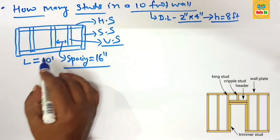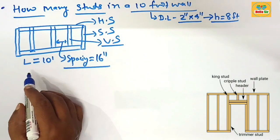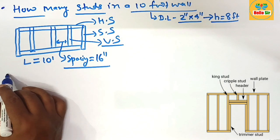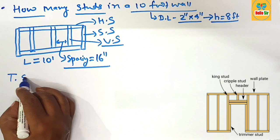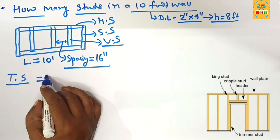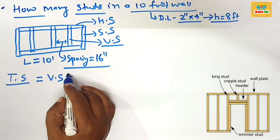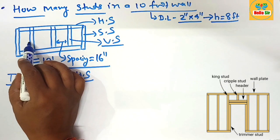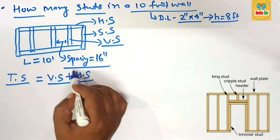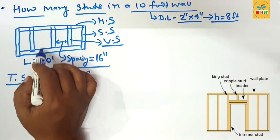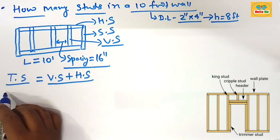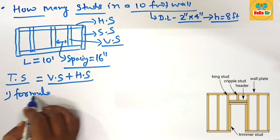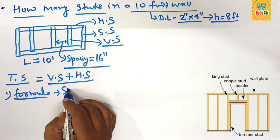To figure out the total number of studs in a 10-foot wall, the formula used is: total number of studs equals vertical studs plus horizontal studs. Vertical studs are the upright members, and horizontal studs are the top and bottom plates. The formula for a single layer of studs at top, bottom, and side wall is used for the vertical stud calculation.